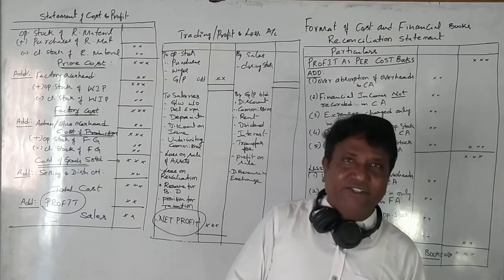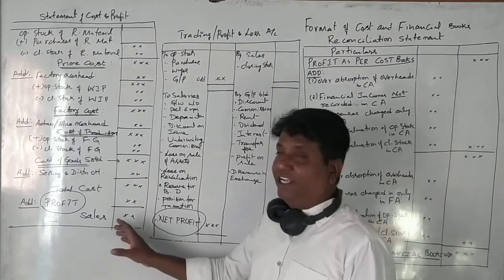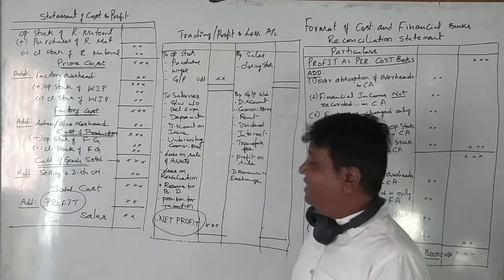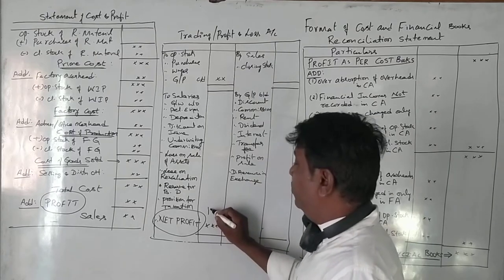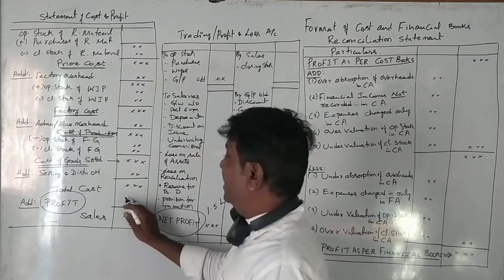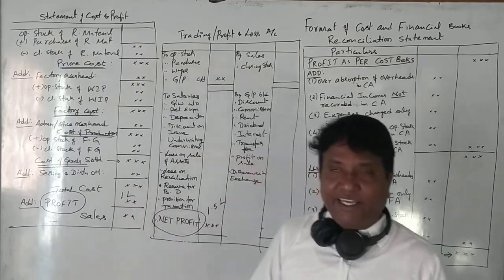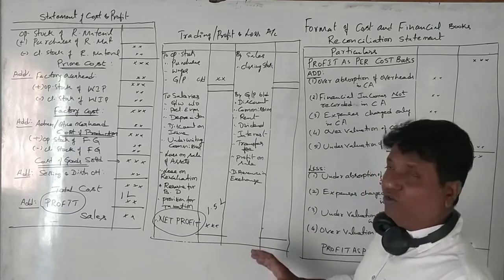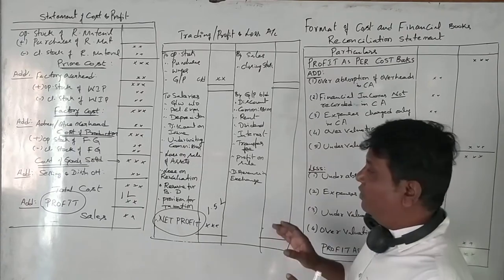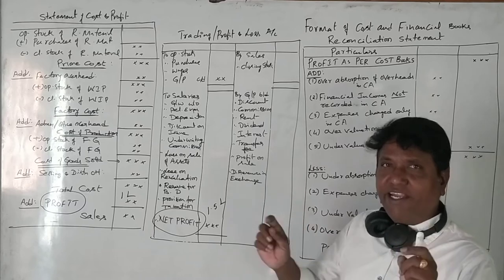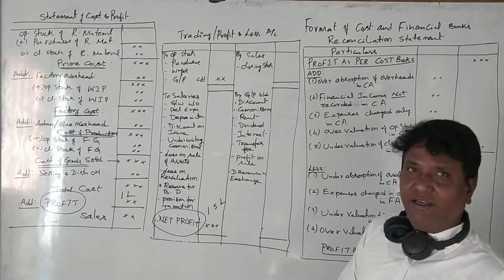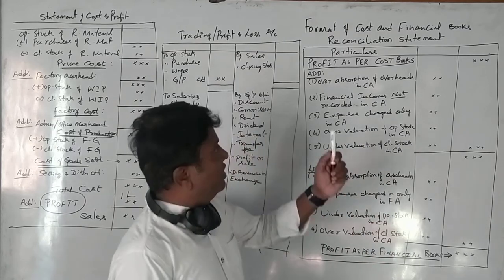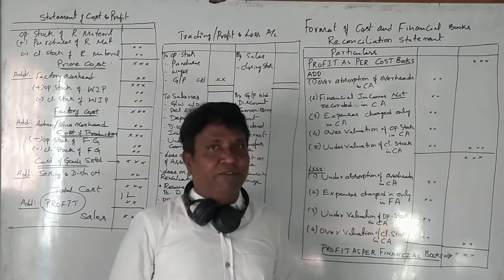We need to understand what are the reasons for the difference in net profit as per financial accounting and cost accounting. For example, if the net profit as per financial books is showing 1.5 lakhs and net profit as per cost books is showing 1 lakh, there is a difference of 50,000 rupees that we need to fix and find the reasons for.